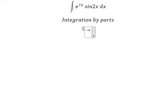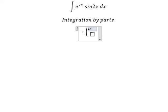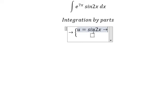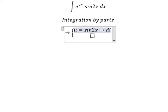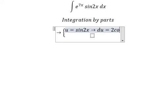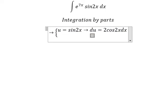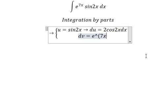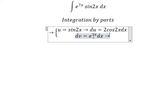We have u equal to sin(2s), so we take the first derivative of both sides, giving us du = 2cos(2s)ds. For dv we have e to the power of 7s ds.